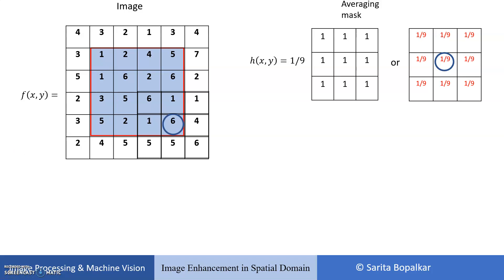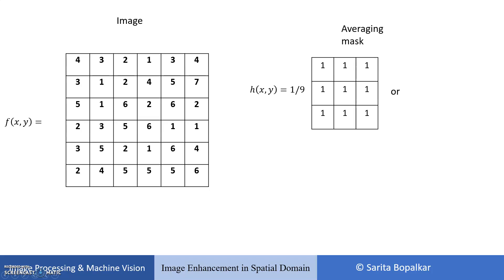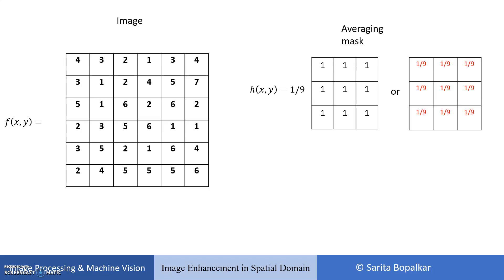Now if I want to retain the size of the filtered image the same as the original, that is 6x6, and I also want to involve the boundary pixels in a filtering action, there are two options: zero padding and pixel replication. We already discussed zero padding and pixel replication in the previous video. Here we will consider zero padding. In zero padding, this is our image f and this is our averaging mask. To consider boundary pixels, we pad zeros: upper row and lower row.